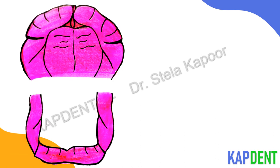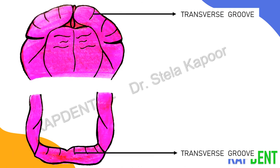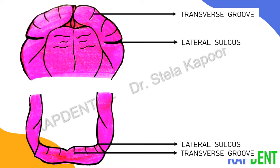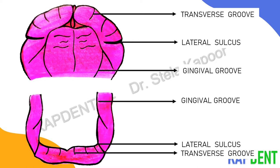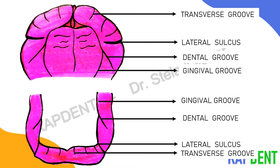Each gum pad is divided into 10 segments by transverse grooves which represent the future deciduous teeth. From these grooves, the one between the deciduous canine and the deciduous first molar is prominent and is called the lateral sulcus. The gingival groove separates the upper gum pad from the palate and the lower gum pad from the floor of mouth. The dental groove originates from the incisive papilla region and extends backward to touch the gingival groove in the canine region, ending laterally in the molar region.